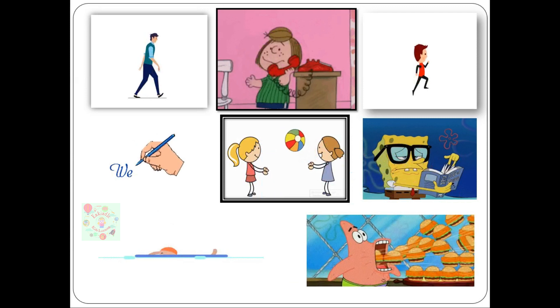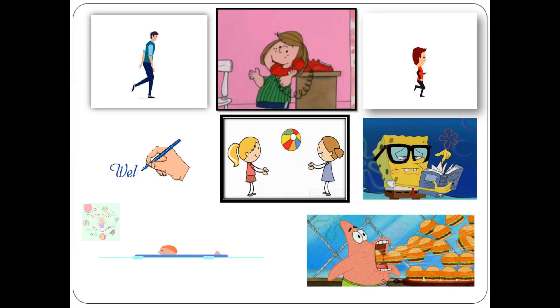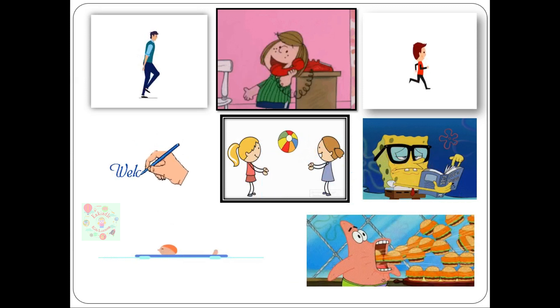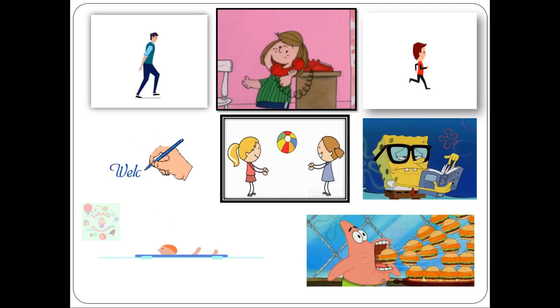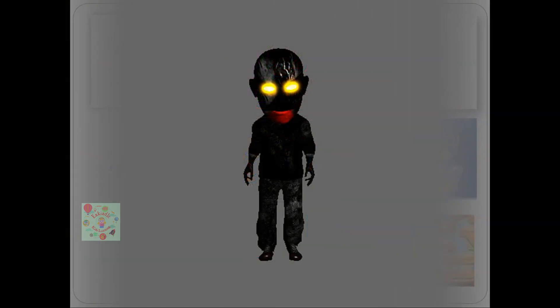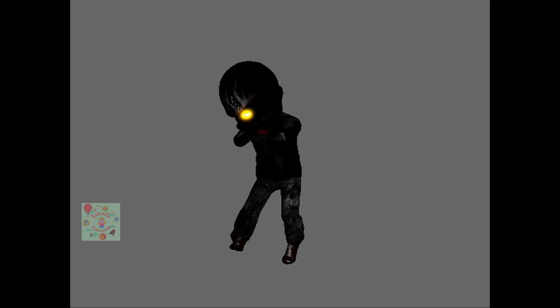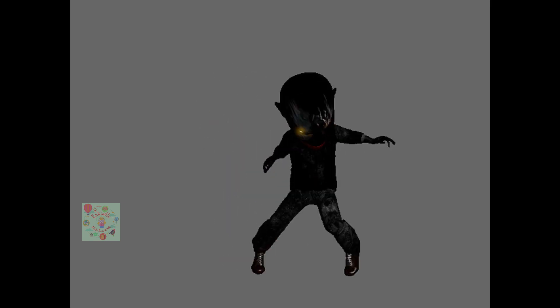You might have noticed that by performing some activities you may use only a single part of your body. For example, while reading a sentence from your textbook, you will only move your eyes. But for the majority of activities you use multiple body parts. For example, dancing involves moving all your body parts — your eyes, hands, shoulders, legs, neck, and so on.